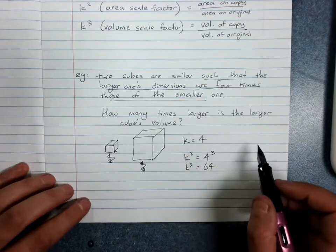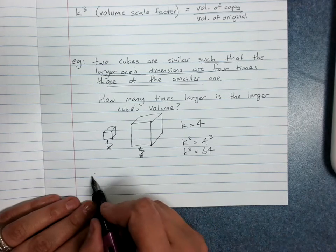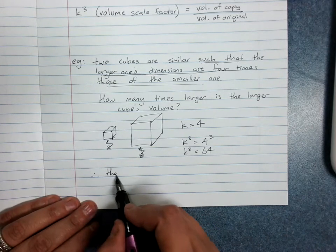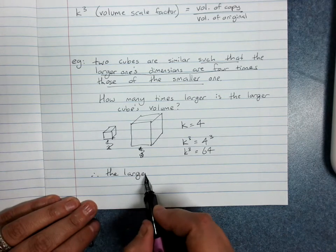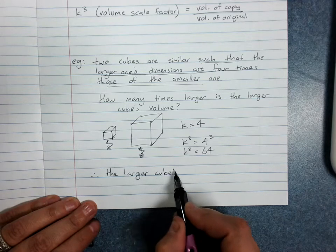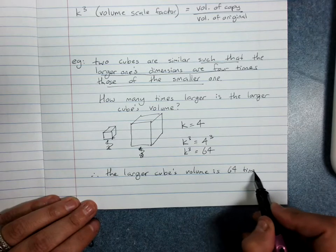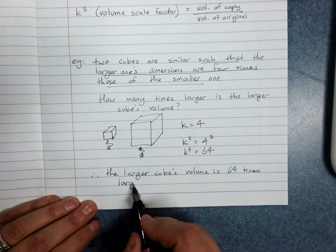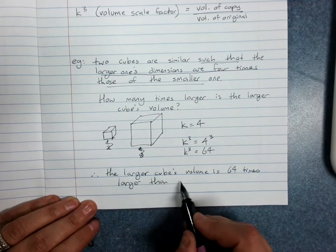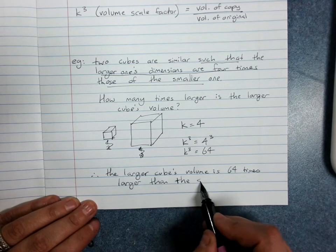It was a word question. You would say, therefore, the larger cube's volume is 64 times larger than the smaller cube's volume.